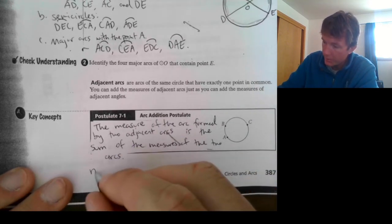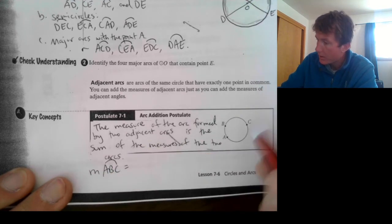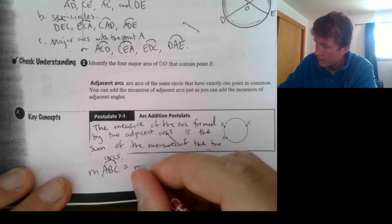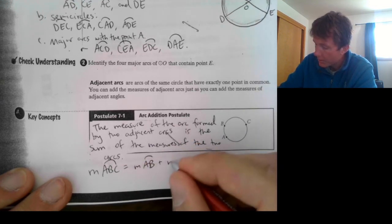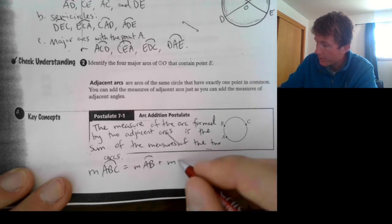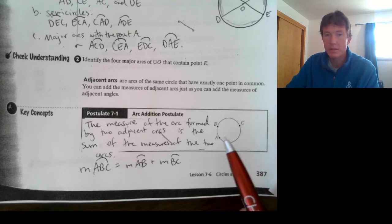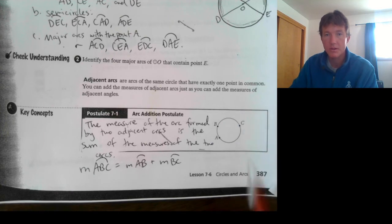So, we have this example, the measure of the arc ABC. ABC is equal to the measure of the arc AB. AB is here. Plus the measure of the arc BC. So, ABC, this whole arc here, is equal to this smaller arc, plus this smaller arc.